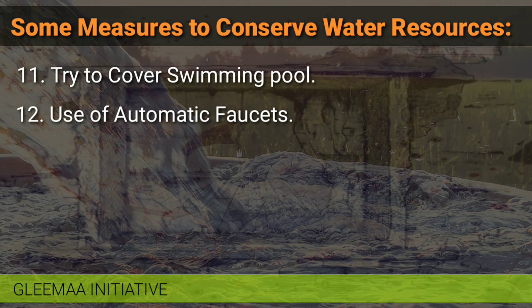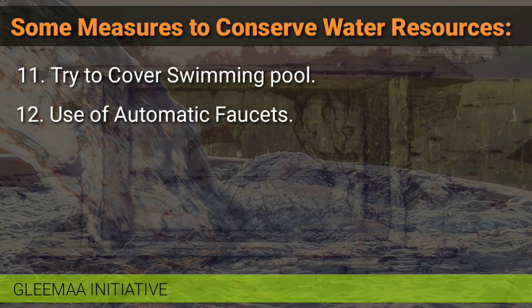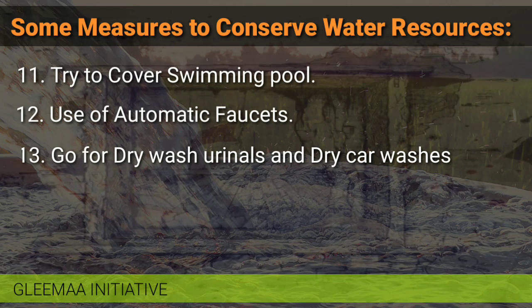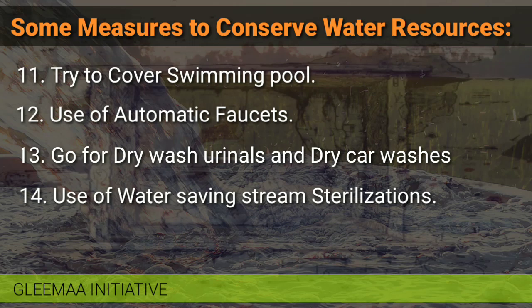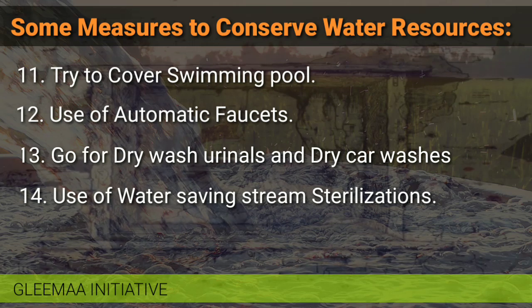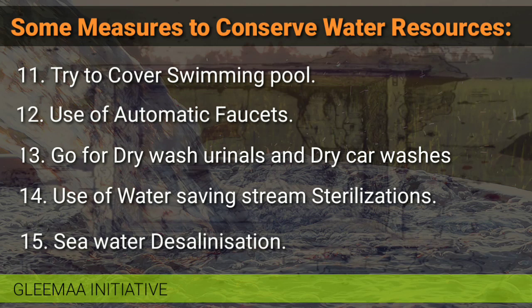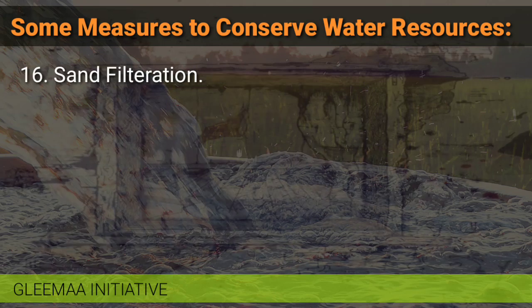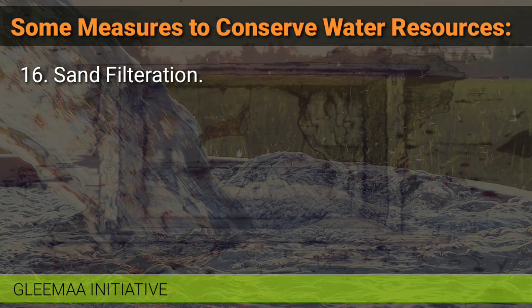Number 12: Use automatic faucets, as this eliminates water waste automatically without hand use. Number 13: Go for dry-wash urinals and dry car washes, as these clean objects without the use of water. Number 14: Use water-saving steam sterilizations, a commercially used technique particularly in hospitals, without the use of water. Number 15: Sea water desalination — as it requires more energy than desalination of fresh water, it can be applied wherever possible. Number 16: Sand filtration, which helps reduce wasted water and misuse of water.